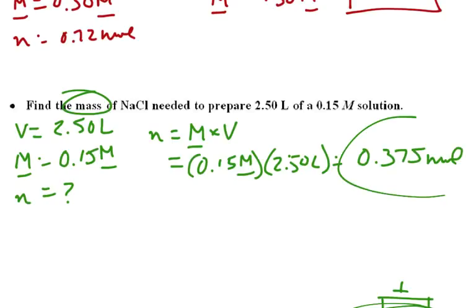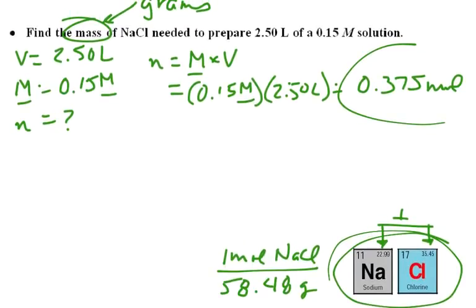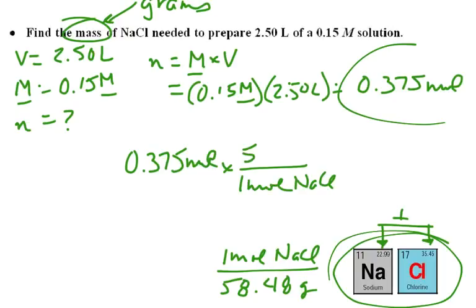Now, that number is not the answer we want, because we really want mass, and mass we know is grams. So we're going to use our conversion factor. Here, we're going to say 0.375 moles times 1 mole of NaCl is 58.48 grams of NaCl.